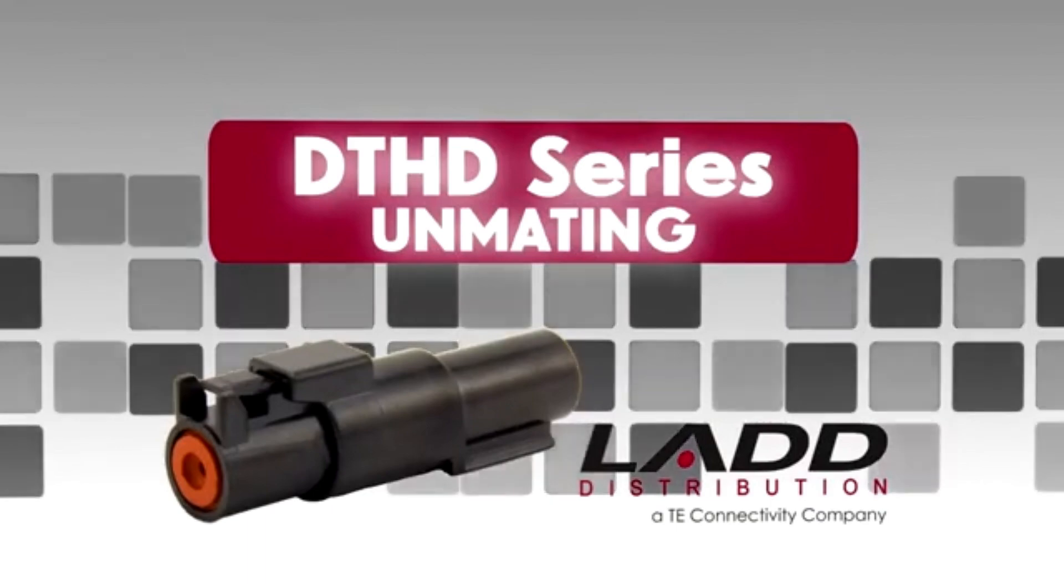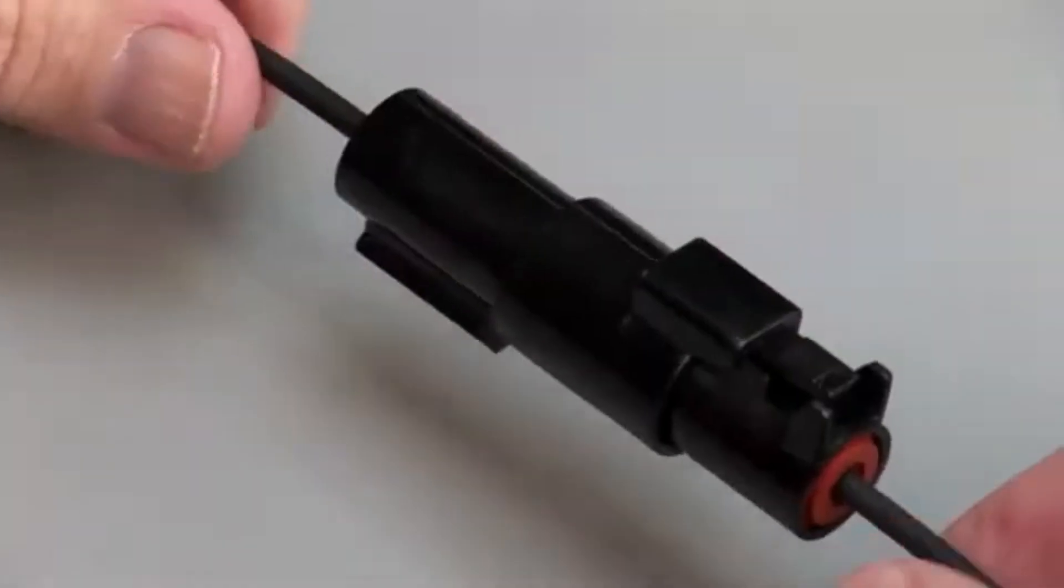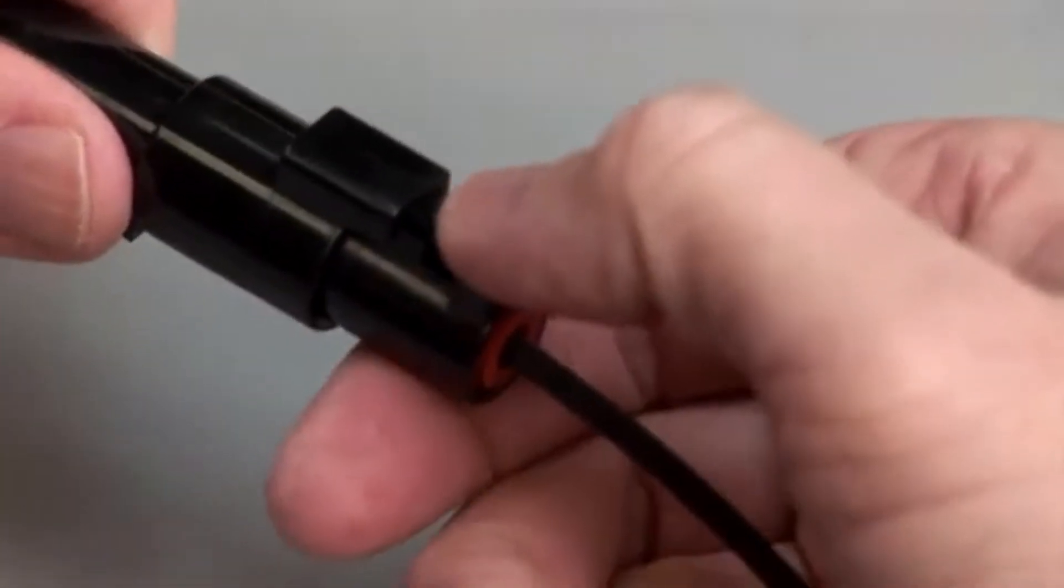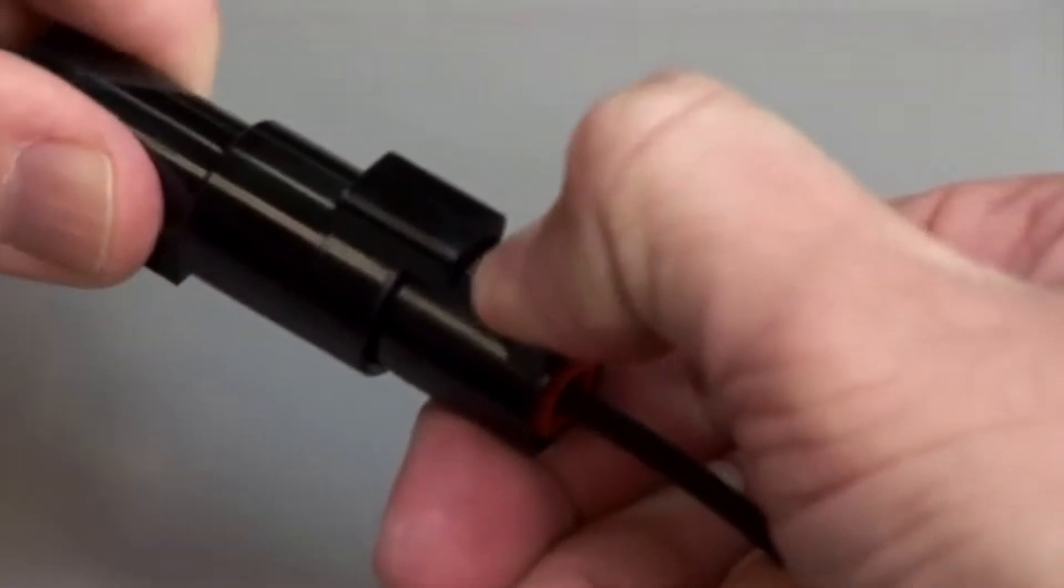DTHD Unmating. To unmate a DTHD Series connector, depress the locking latch on the outside of the plug while pulling the plug and receptacle apart.